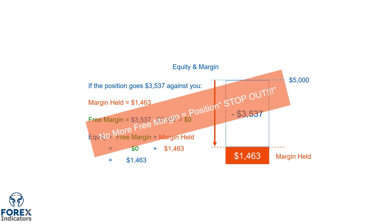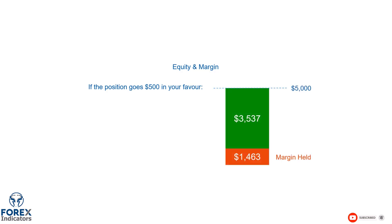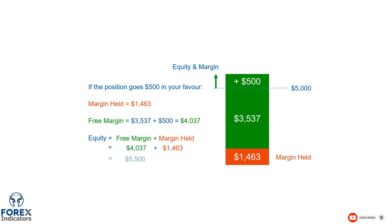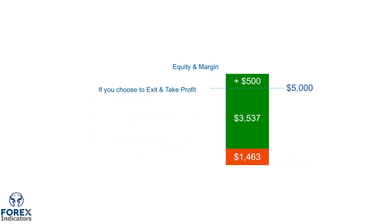Now let's take a look at what happens if the trade goes in your favor by $500. The margin held will remain the same. However, the free margin this time will be calculated by taking the initial amount and then adding $500, which would give you a free margin amount of $4,037. It would also mean that if you close the position at this time, your account balance would be $5,500 — a profit of $500.